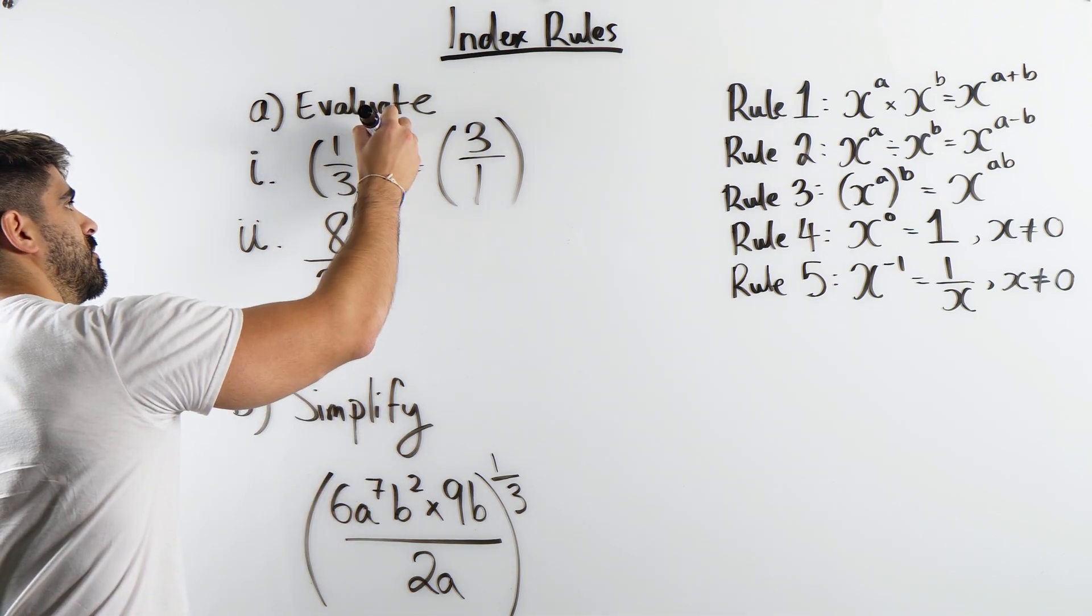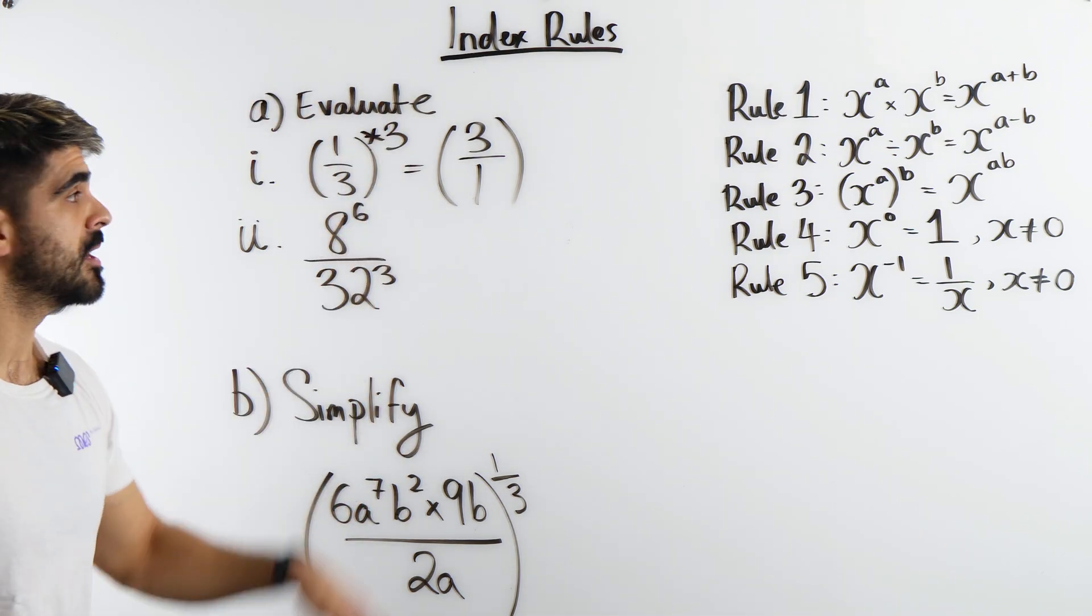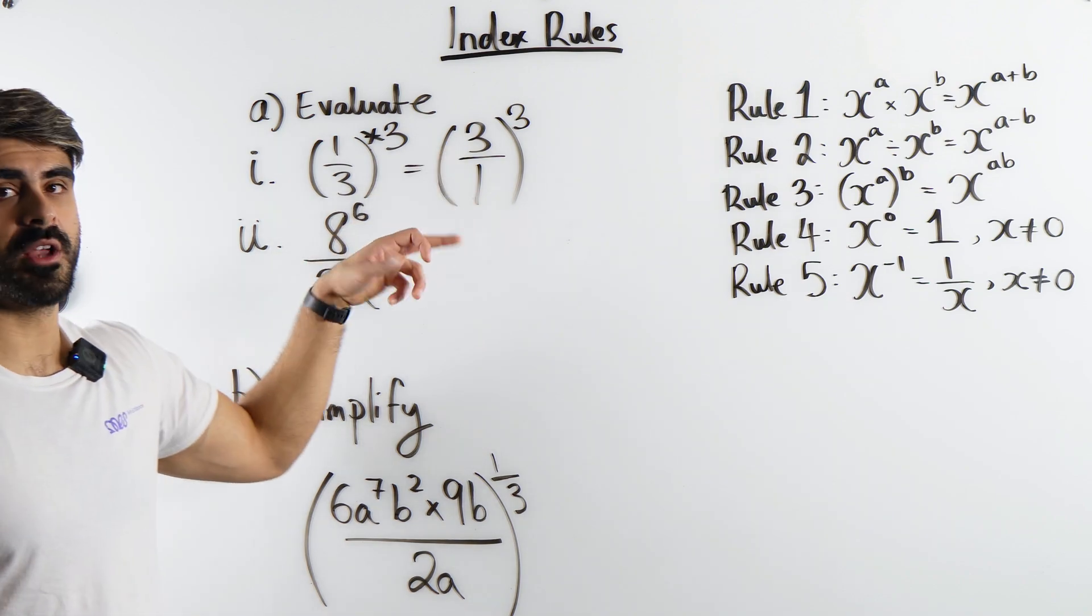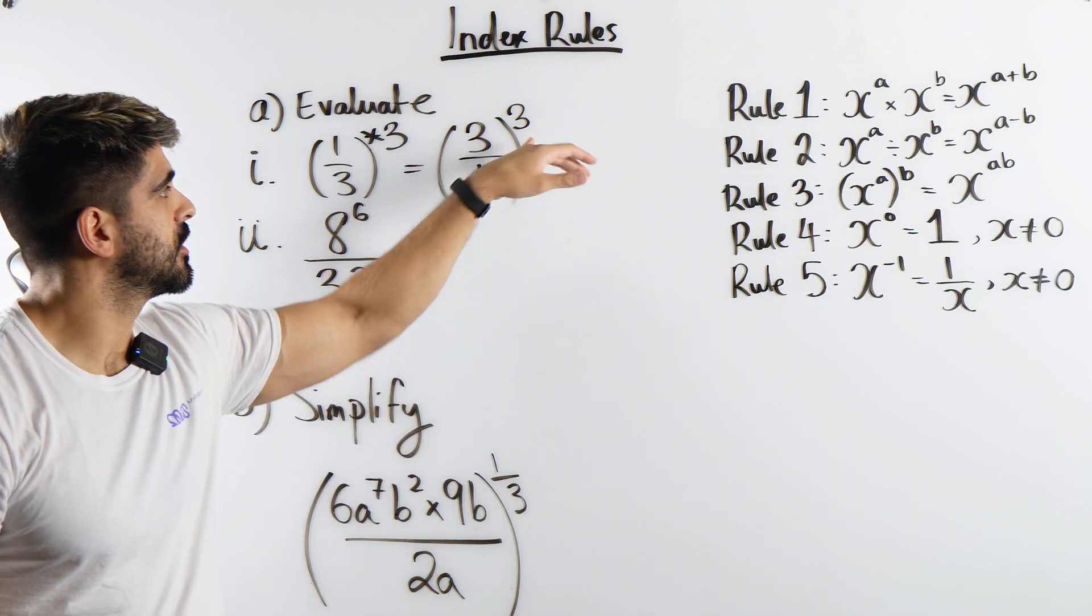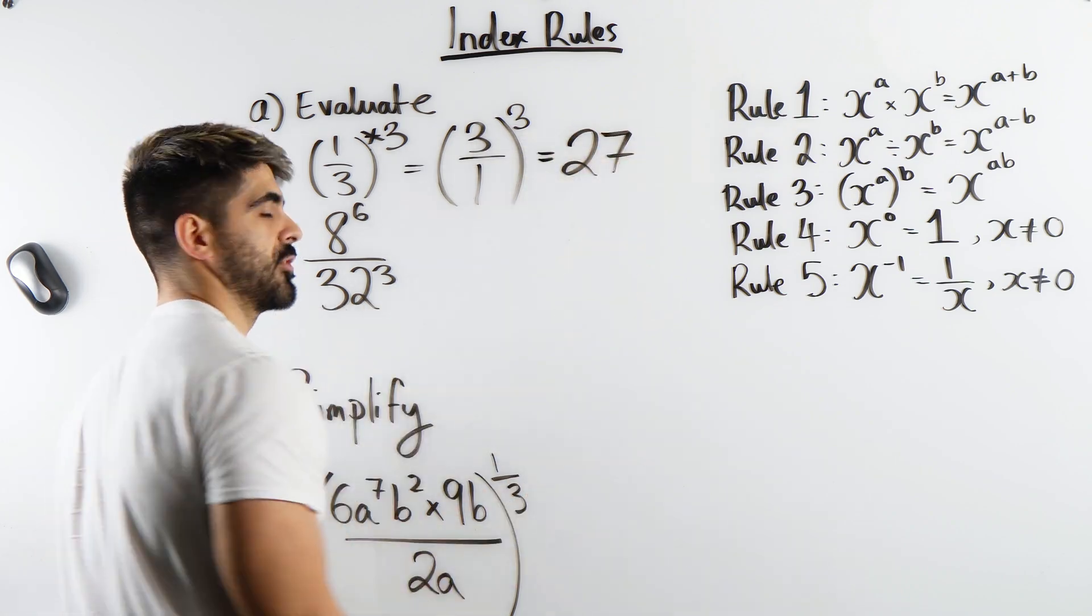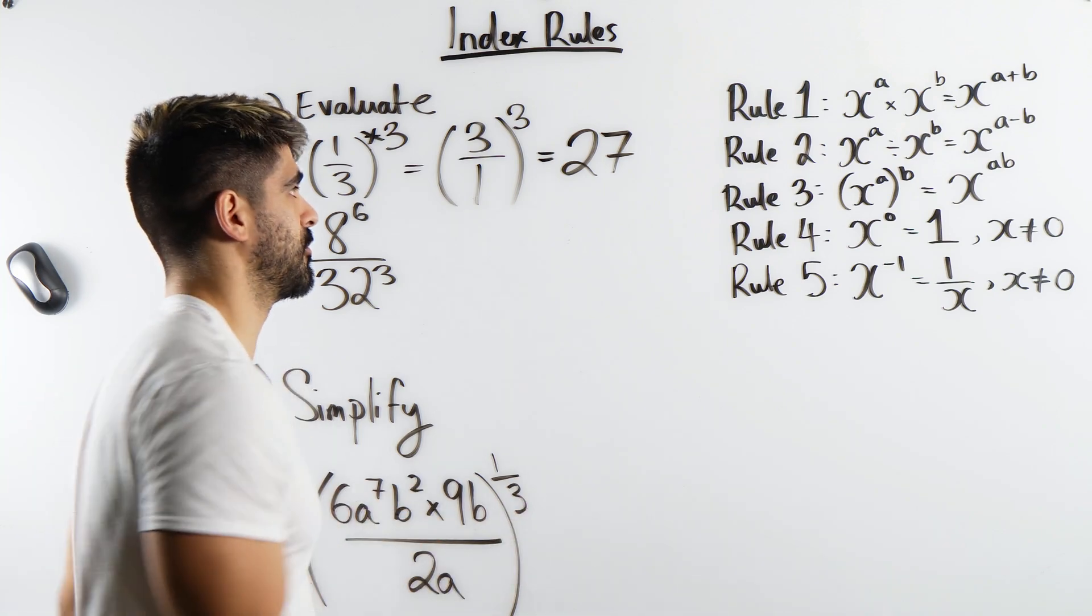Yeah, so we flip these, flipping like reciprocals. Once we've done the reciprocal you can just cross it out. But we still have that cubed, right? Okay, so we have 3 over 1. 3 over 1 is just 3. Cubing that, 27. Yeah, 3 times 3 is 9 times another 3, 27.